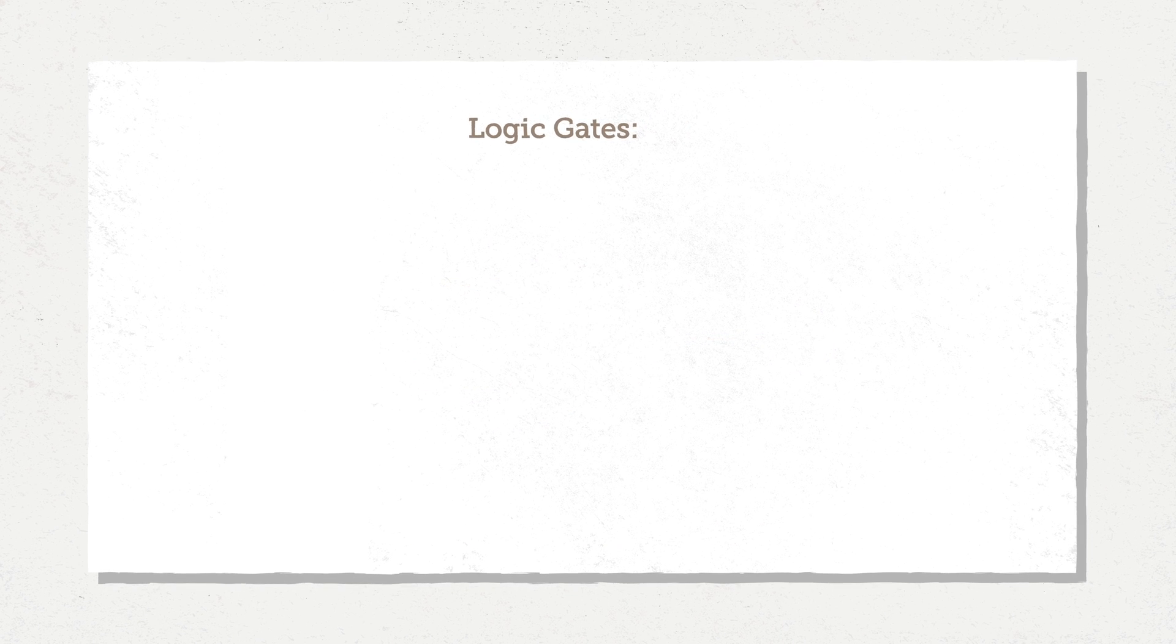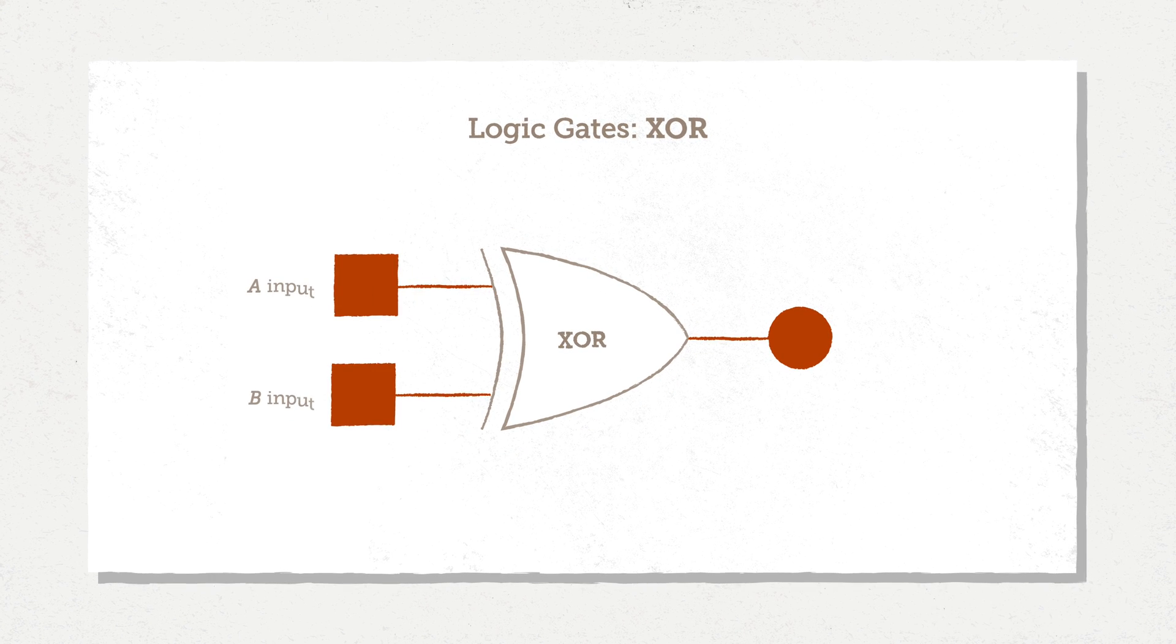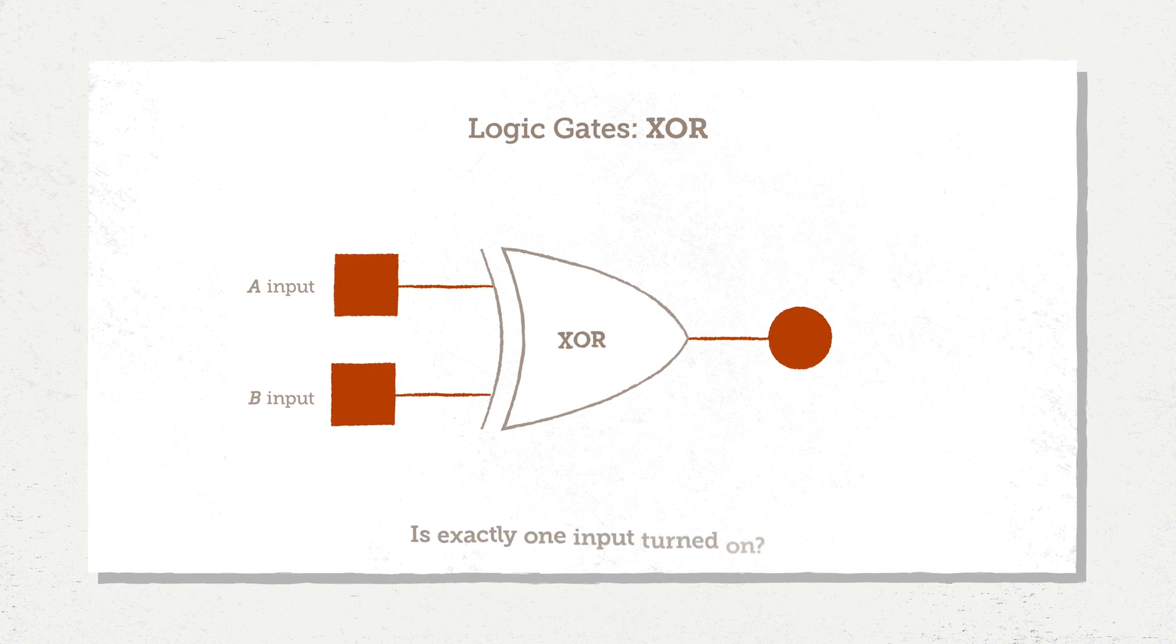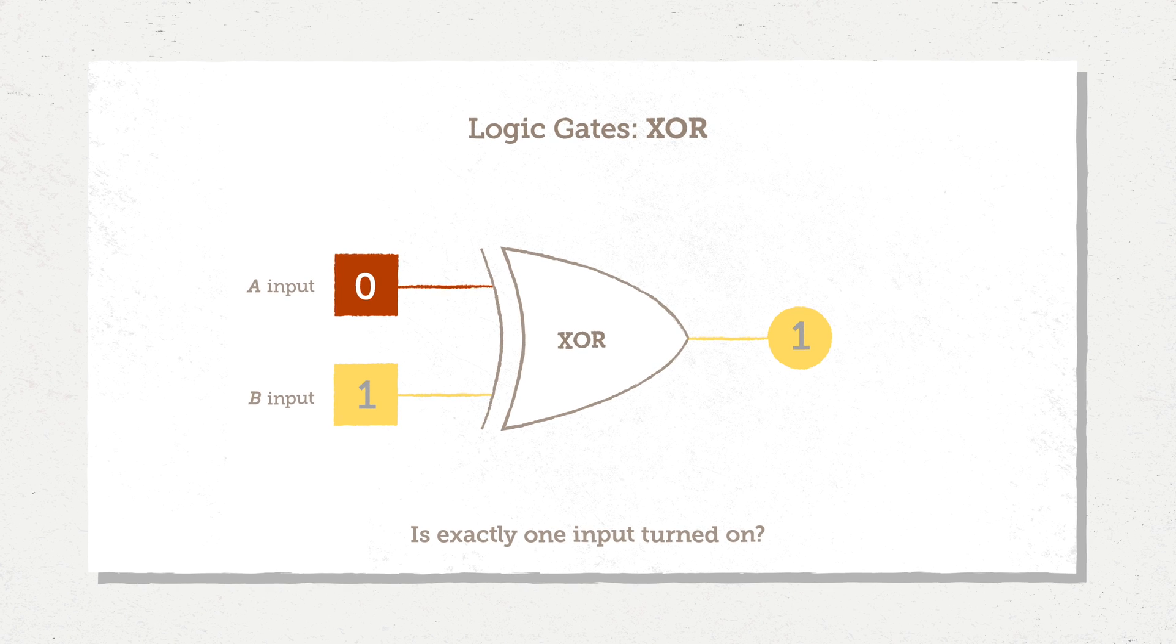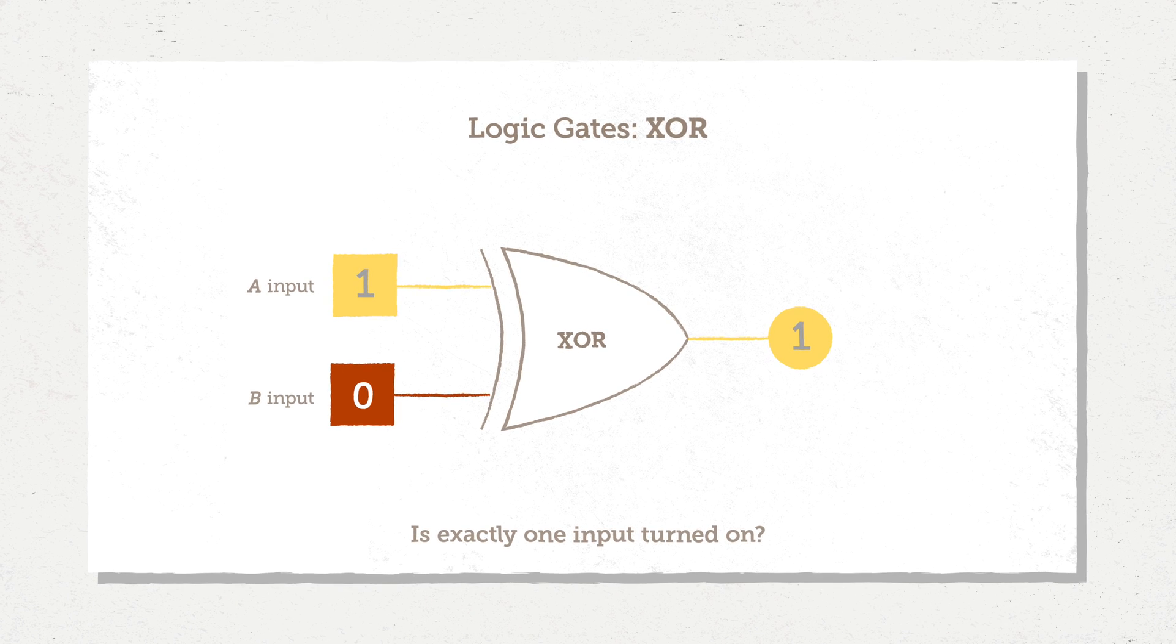The last gate we'll be needing is called an exclusive OR gate. An exclusive OR gate tells us when exactly one input is true. So here, with 0 exclusive OR 0, the output is 0. 0 exclusive OR 1, the output is true. 1 exclusive OR 0, the output is true. But unlike the OR gate, here with 1 exclusive OR 1, the output is 0.